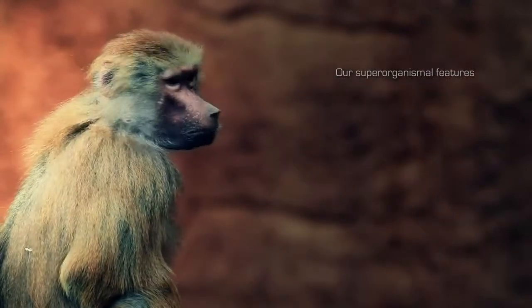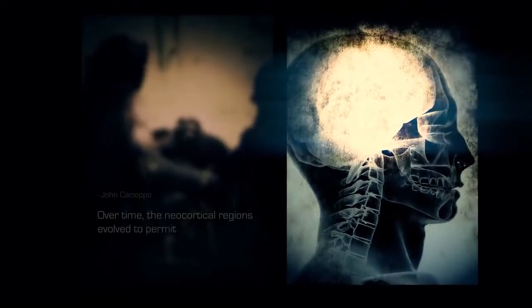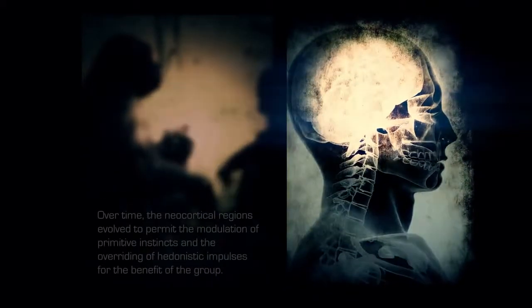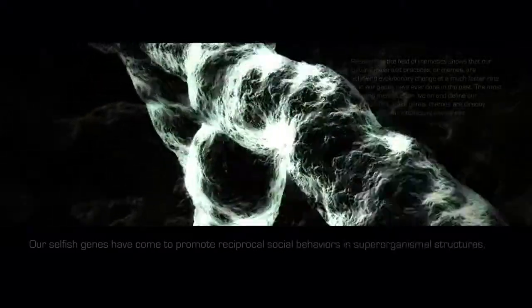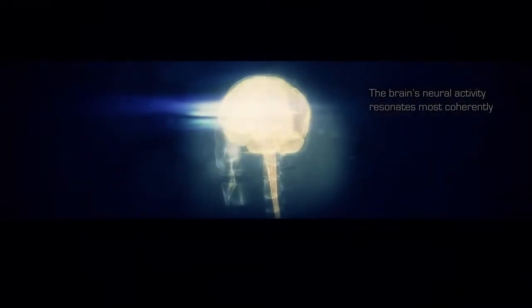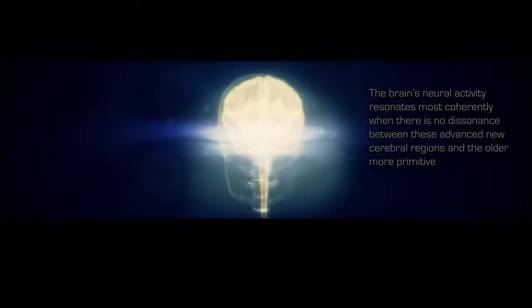Our superorganismal features are also reflected in evolution, where our survival as primates relied on our collective abilities. Over time the neocortical regions evolved to permit the modulation of primitive instincts and the overriding of hedonistic impulses for the benefit of the group. Our selfish genes have come to promote reciprocal social behaviors in superorganismal structures, effectively discarding the notion of survival of the fittest. The brain's neural activity resonates most coherently when there is no dissonance between these advanced new cerebral regions and the older, more primitive ones.